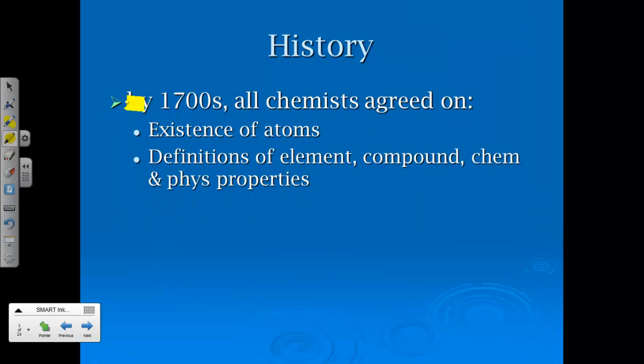Now, so we make a big jump here, all the way to the 1700s. Chemists agreed on two things. Number one, that atoms did indeed exist. So they were back to the belief that Democritus held, that atoms were present and around. They also agreed on the definitions of several terms. Number one, element. They knew different elements existed. Some of them had been discovered and named in infancy stages of that information. Compound, they knew elements could combine into different combinations, as well as chemical versus physical properties.